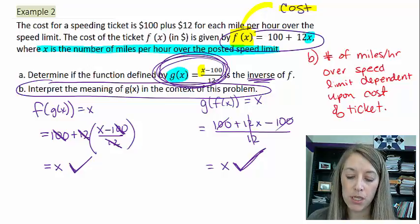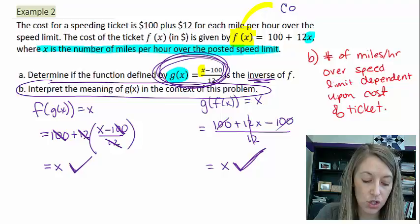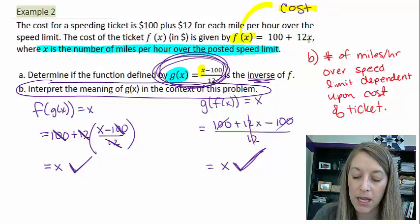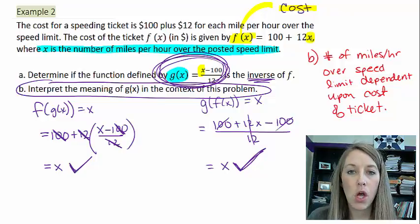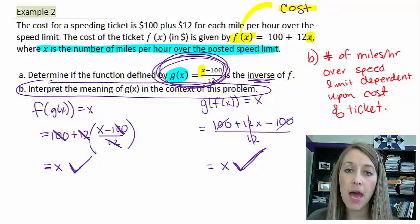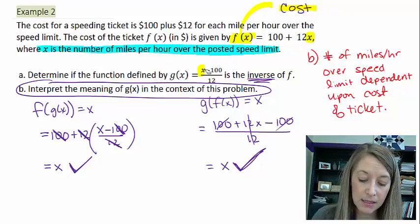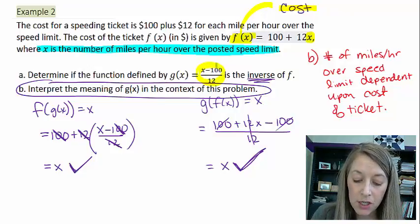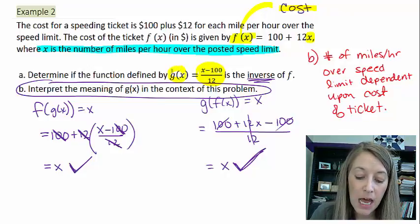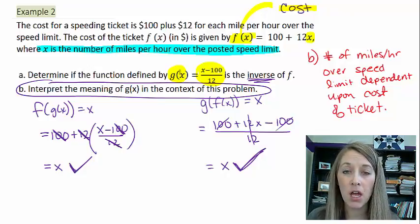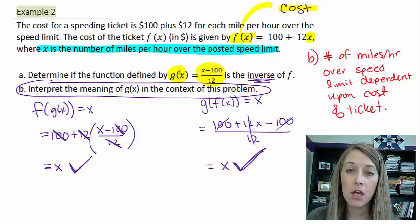So let me kind of describe this one more time. So first our f of x function tells us the cost of the speeding ticket dependent upon the number of miles an hour over. So a police officer could say you are going 10 miles an hour over the speed limit. So dependent upon that, here is the cost of your speeding ticket. Now if we do the inverse, it flip-flops it. It says if the cost of your speeding ticket is this much, then this is how many miles per hour over the speed limit that you are traveling. So if a friend comes up to you and says, I have a ticket that cost me $160, then you could figure out how fast they were in fact going over the speed limit.